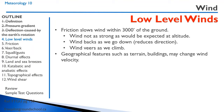Geographical features such as terrain and buildings may change the wind velocity. As you descend, the winds back — they turn to a lower direction than they are up high. For example, if the wind is 090 degrees at 3,000 feet, it might be 060 degrees at sea level. This is the result of slowing the wind down, which also reduces the Coriolis force.